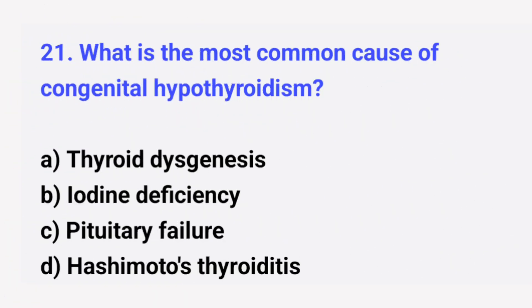Question number 21. What is the most common cause of congenital hypothyroidism? The right answer is option A: Thyroid dysgenesis.